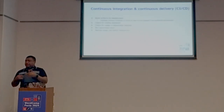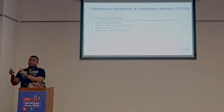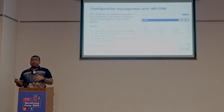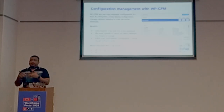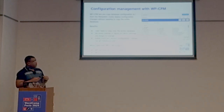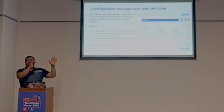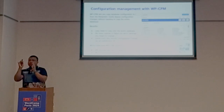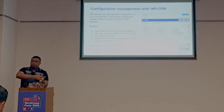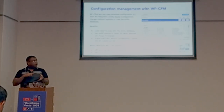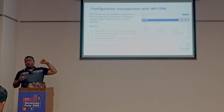If you are using continuous integration — there will be a talk about CI/CD later today — you can build artifacts by running Composer within the CI/CD server, so you do not need Composer in the production environment. Also, WordPress is more than code: the database contains posts as content, but also configuration like layout settings. I highly recommend looking into wp-cfm, which reads database tables and exports configuration into a JSON file you can commit to the repository and import in target environments.